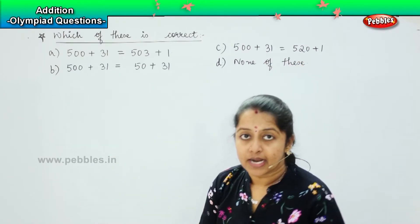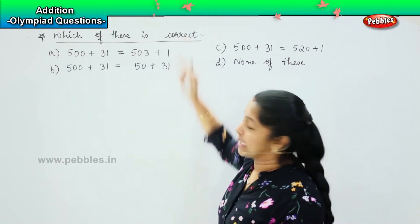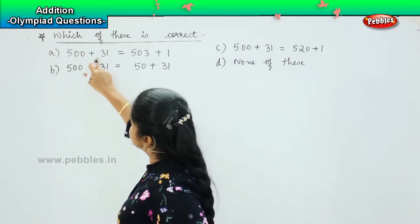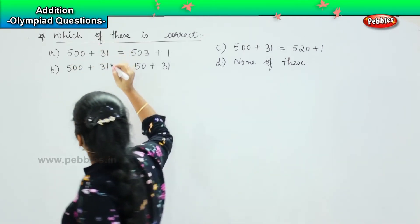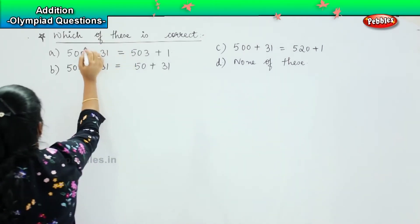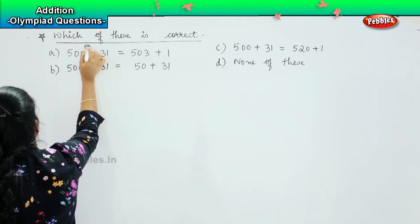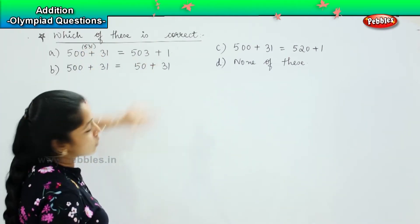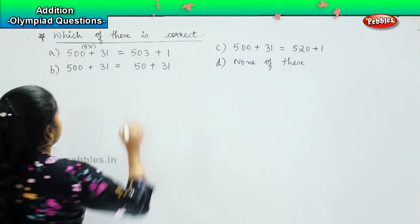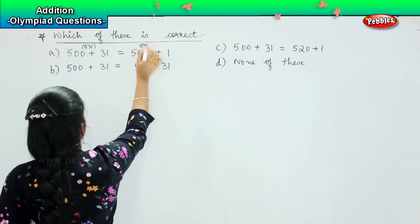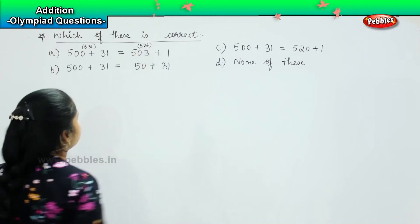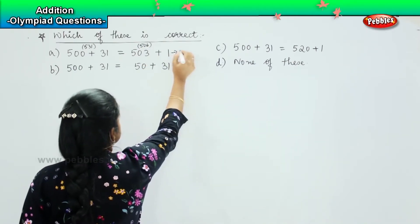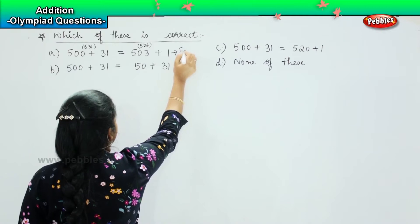So here they are asking us which of these is correct. Let's see what is the value here. 500 plus 31 is nothing but 531. And 503 plus 1 is how much, children? Very good, it is 504. So is 531 and 504 the same? No.